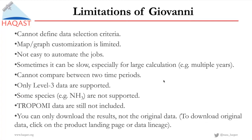I also want to mention some of the limitations of Giovanni. Giovanni, being an online tool, lacks the flexibility to allow us to manipulate data as we can do with programming tools like Python or R. For example, in Giovanni we cannot define data selection criteria to filter out invalid negative values. Also, the customization of figures is very limited. If you are interested in making several figures together, it's not easy to automate the jobs — you will have to manually repeat the process. And sometimes, depending on the traffic or the data sets you request, this process could be slow, especially for large calculations.